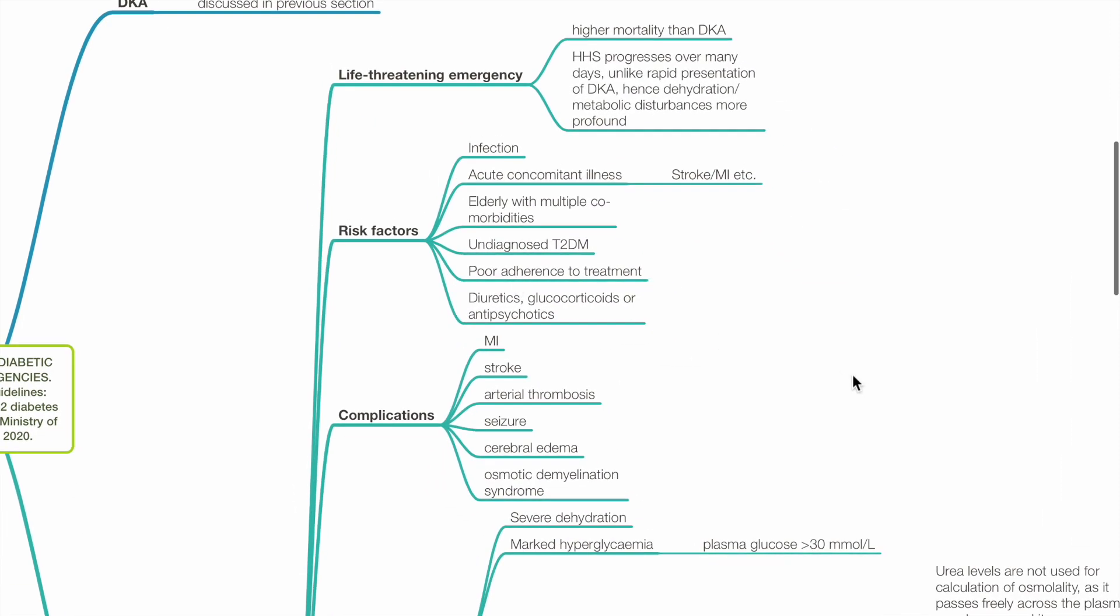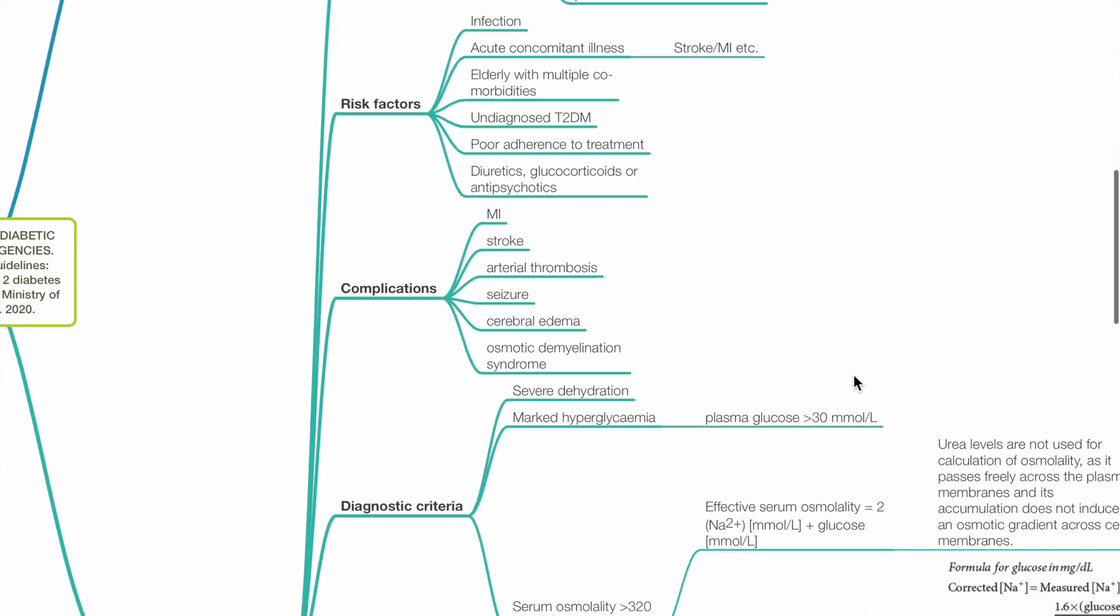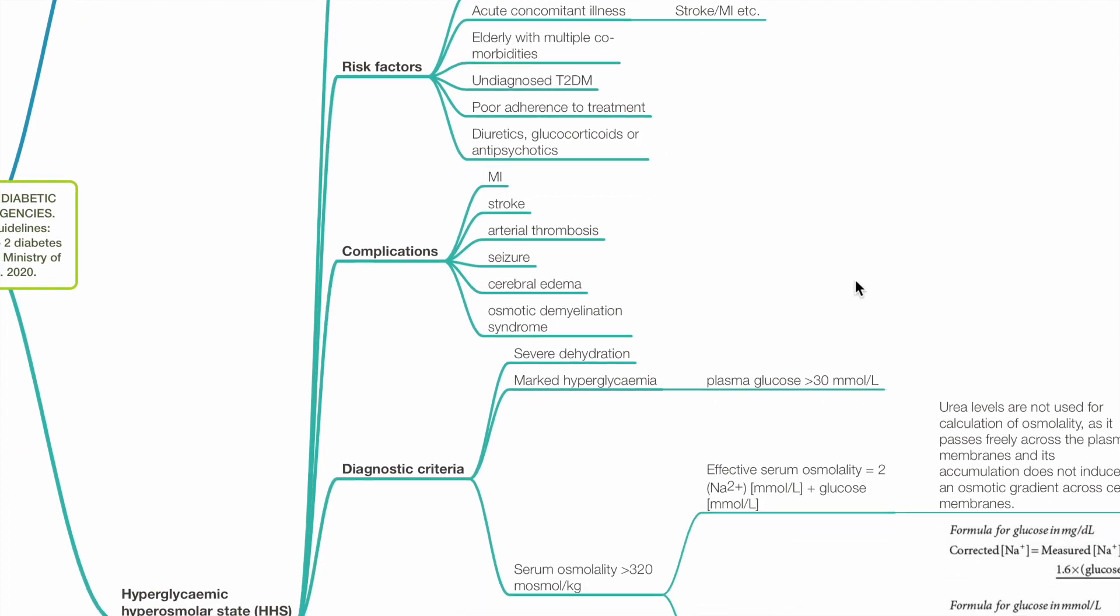Risk factors include infection, acute concomitant illness such as stroke or MI, elderly with multiple comorbidities, undiagnosed type 2 diabetes mellitus, poor adherence to treatment, use of diuretics, glucocorticoids or antipsychotics. Complications of HHS: MI, stroke, arterial thrombosis, seizure, cerebral edema, and osmotic demyelination syndrome.